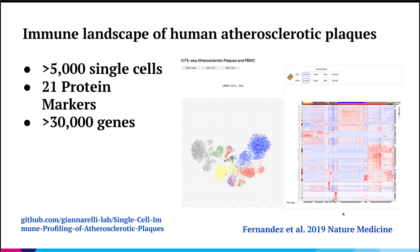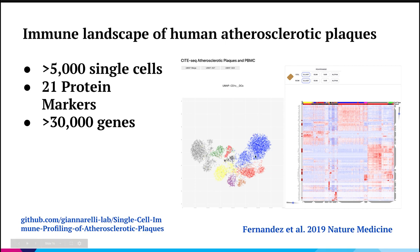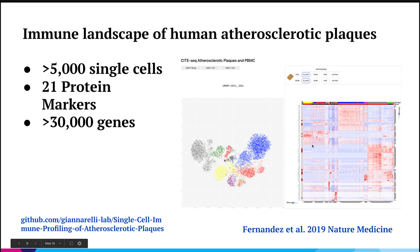Our next example moves on to a biological example, and we're actually going to use a lot of the same techniques we used on the CityBike example. For this dataset, we're visualizing data from a publication where we worked with our collaborators in the Giannarelli lab at Icahn School of Medicine at Mount Sinai, recently published in Nature Medicine in 2019. We investigated the immune landscape of human atherosclerotic plaques, and we built a dashboard for a subset of the data that includes over 5,000 single cells, measuring 21 protein markers and over 30,000 genes.